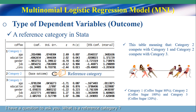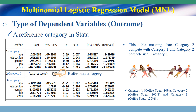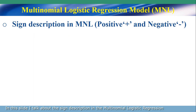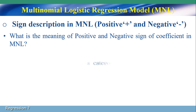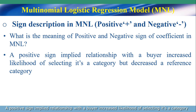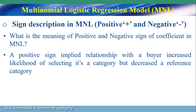I have a question for you: what is the reference category? The reference category is the coffee that has sugar 100%. What is the meaning of positive and negative sign or coefficient in multinomial logistic regression? A positive sign implies that the relationship with a variable increases the likelihood of selecting that category but decreases the reference category.